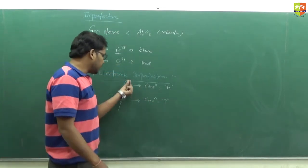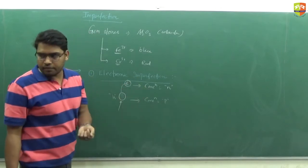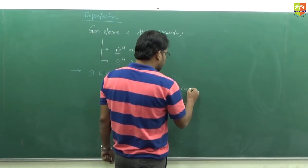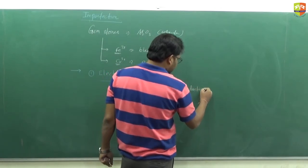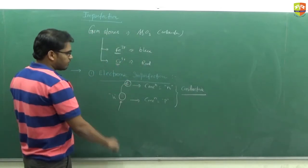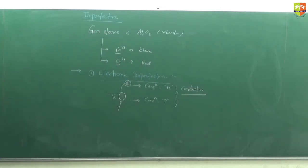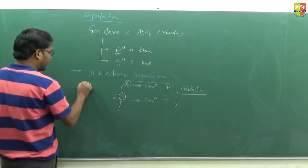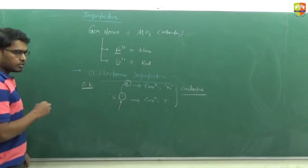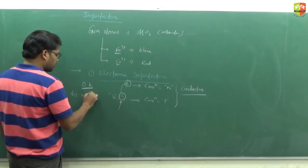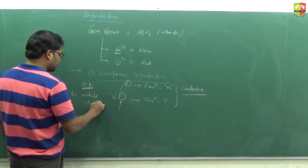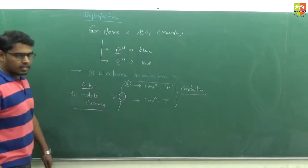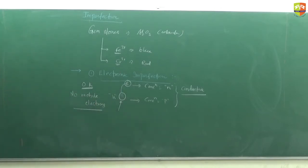Because of this electron transition, solids show conduction. The conductive nature is due to both electrons and holes — both give rise to the conductive nature of the crystal. At absolute zero temperature, there is no movement of electrons, no mobile electrons, and no conduction. When temperature increases, electrons occupy higher energy levels, become mobile, create holes, and both mobile electrons and holes give rise to conduction in solids.